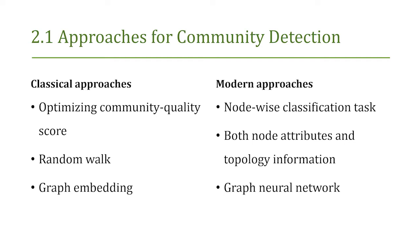Classical approaches mainly focus on optimizing a community quality score, random walk, and graph embedding. These methods usually follow an unsupervised learning paradigm and only concern the topological structure of a graph. Model-based approaches recast community detection as a node-wise classification task, where nodes with the same label are considered to be in the same community. The main difference is that traditional community detection only concerns topological information, while node-wise classification also concerns both node attributes and topological information. The representative work is graph neural networks, which can be unsupervised, semi-supervised, or supervised.